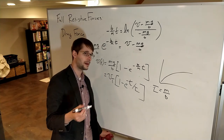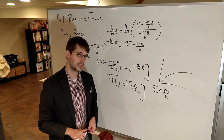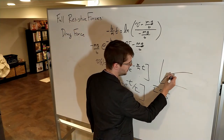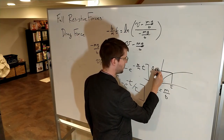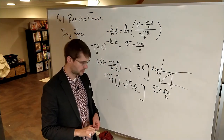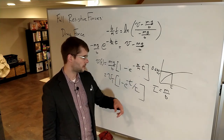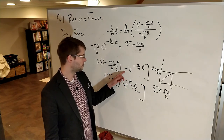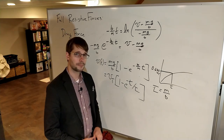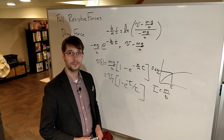If you wait one time constant tau, the speed will have gone from zero up to 63.2% of its final value — that's just 1 minus e to the negative 1, so there's nothing special about that number. Hopefully this approach made sense. If you have any questions, please let me know, and see you in class.